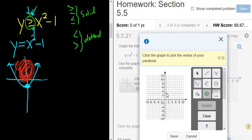Then it says, click the graph to plot the vertex of your parabola. So the vertex is down here, 0 negative 1. You can see right here it shows the point. See, 0 negative 1, there it is in the top right corner. So I'm going to left click.